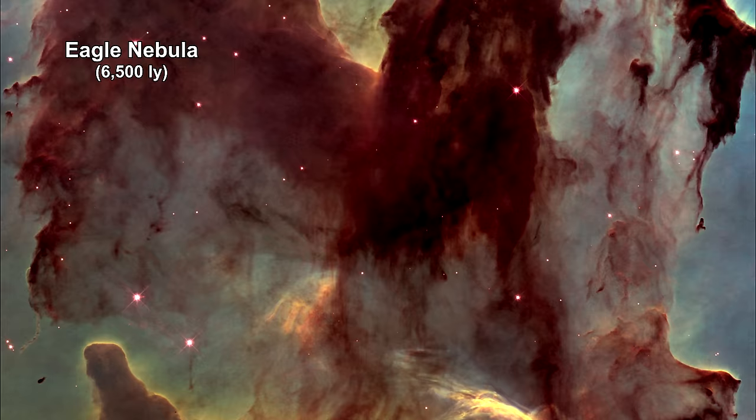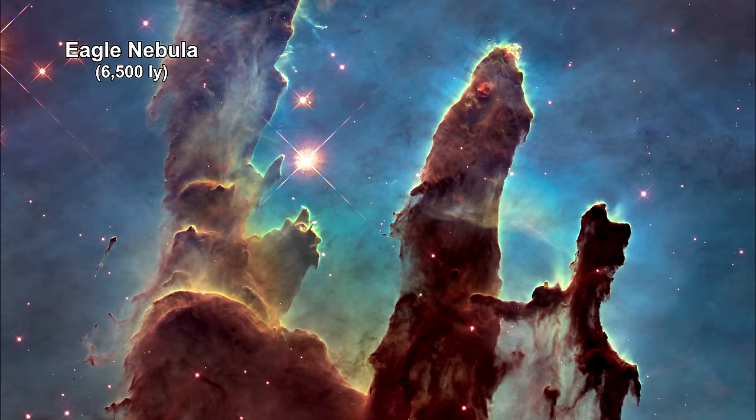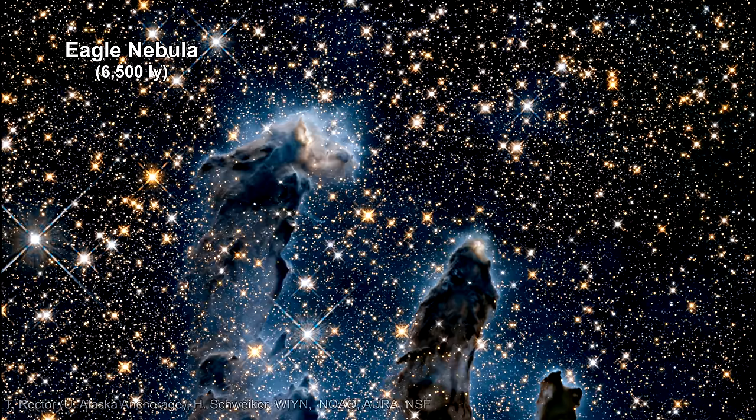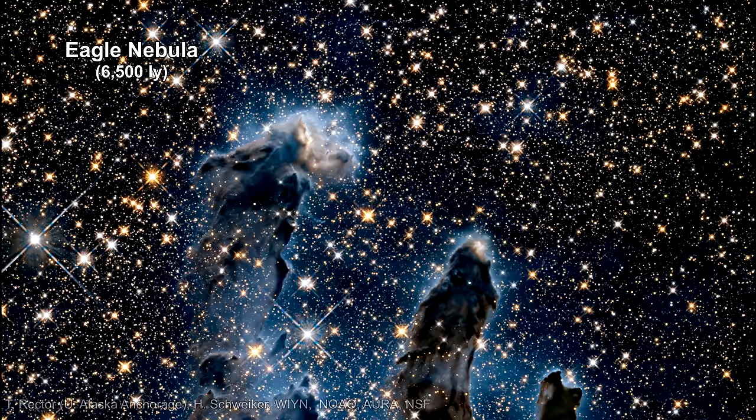Protostars remain shrouded in the dust and gas clouds that created them. The actual protostars can only be seen by infrared telescopes. The Eagle Nebula is a good example of this. It contains large numbers of forming stars. Some of these protostars can be seen with Hubble's near-infrared image.